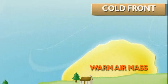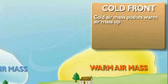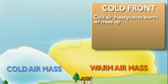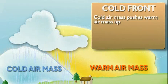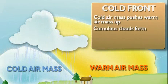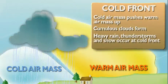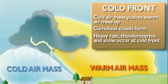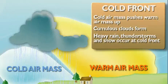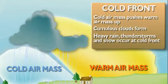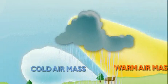This snowstorm is a result of a cold front. Cold fronts happen when a cold air mass pushes a warm air mass up. Big puffy clouds, called cumulus clouds, are formed. When you see dark clouds like those, you can bet you're in for some heavy rain, thunderstorms, or a snowstorm like this.